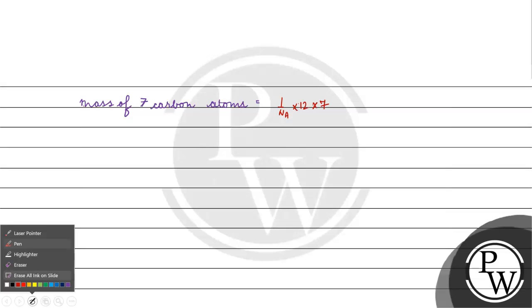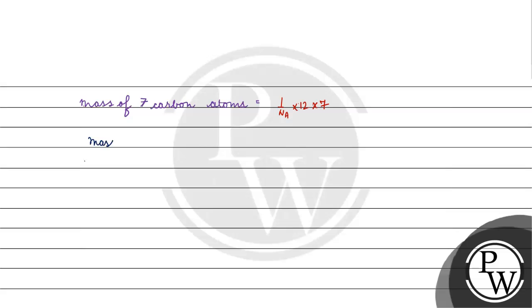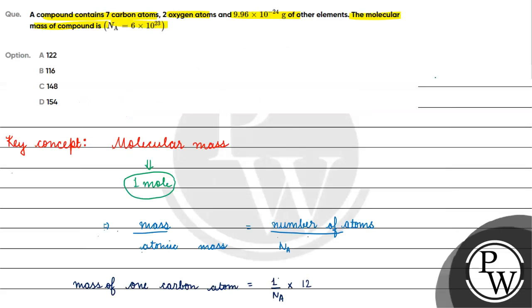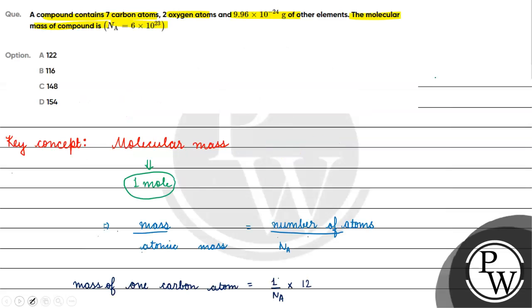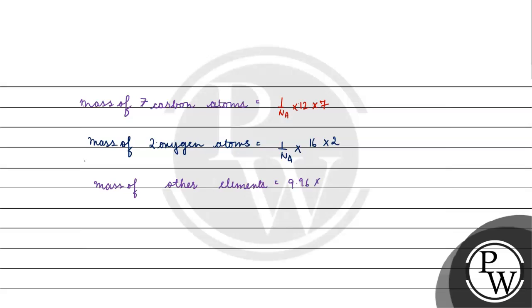The mass of 2 oxygen atoms equals (1 / Avogadro's number) × 16 × 2, since the atomic mass of oxygen is 16. And the mass of other elements is given as 9.96 × 10⁻²⁴ grams.